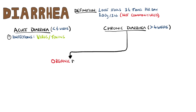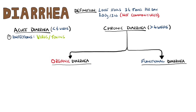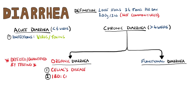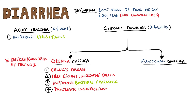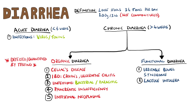Chronic cases, i.e. cases lasting more than 4 weeks, need to be divided into either organic or functional causes. The difference between them is that organic causes can be detected or quantified through testing, while functional causes cannot. Examples of organic causes include celiac disease, inflammatory bowel disease like ulcerative colitis or Crohn's disease, bacterial and parasitic infections, pancreatic insufficiency, and intestinal neoplasms. Functional causes of chronic diarrhea include irritable bowel syndrome, lactose intolerance, food allergy, and abuse of drugs or alcohol.